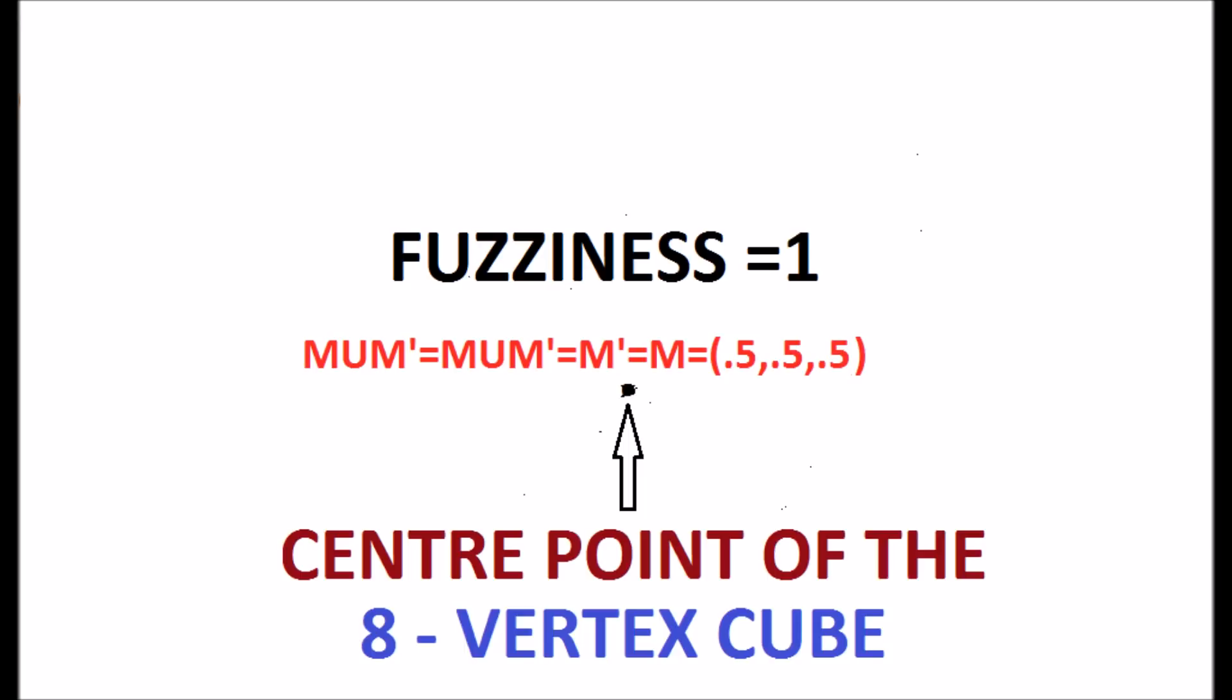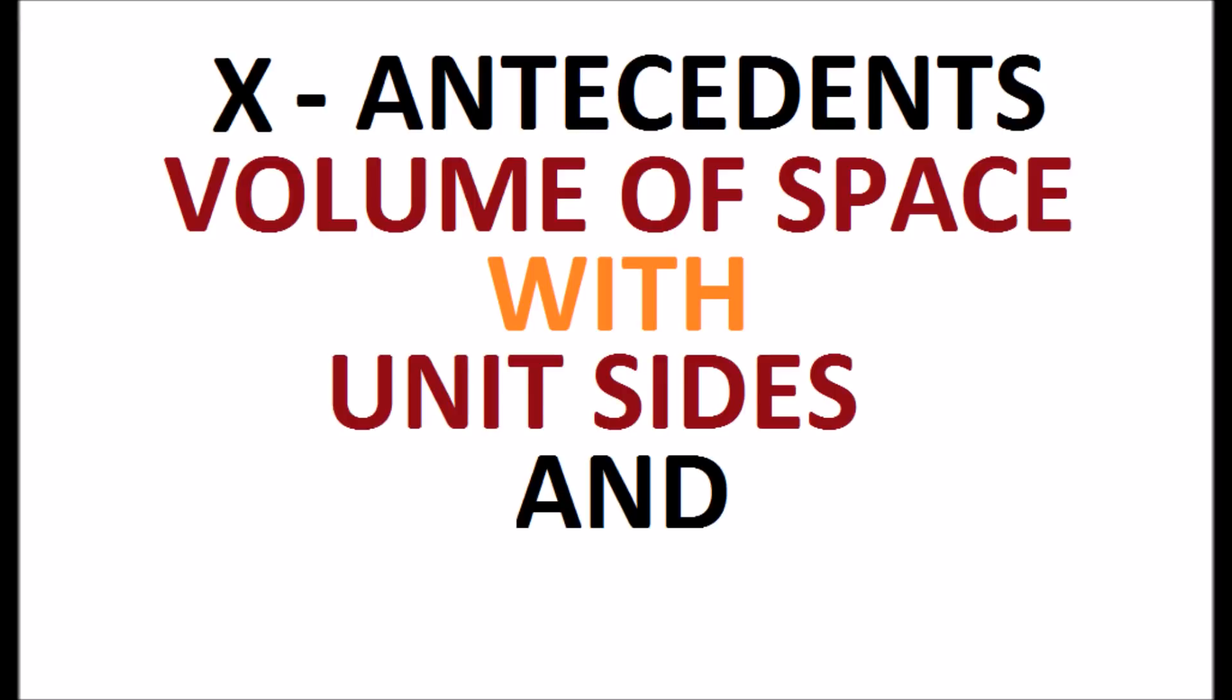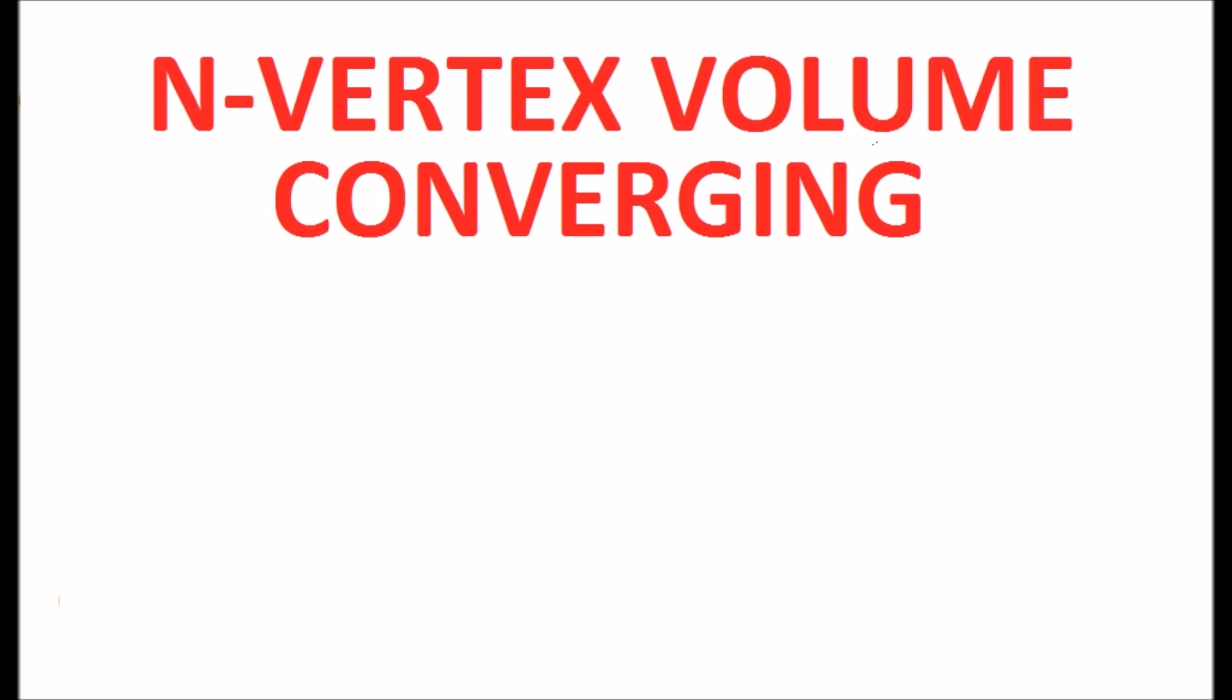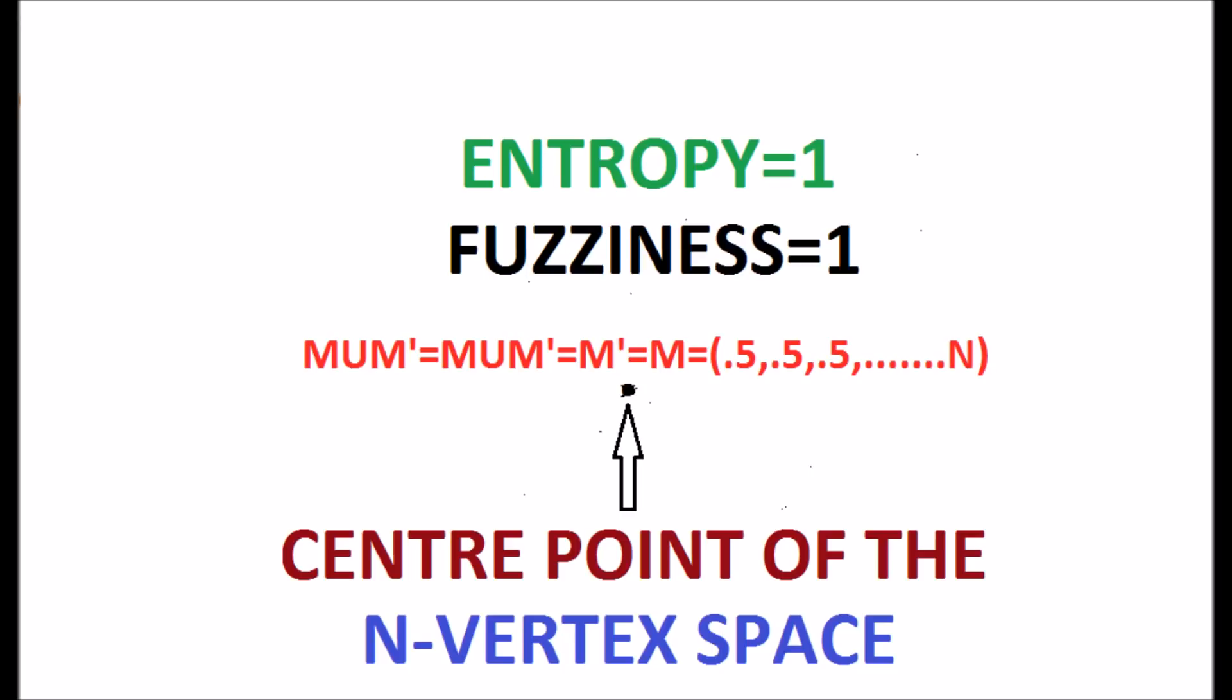Now imagine n antecedents, which will create a volume of space with unit sides having n vertex. There are many fuzzy sets inside the n vertex volume of space, having n membership values, and forms a volume of space inside the n vertex space with same n vertex. The volume is sinking down and converging to a point. The point is the middle of the n vertex volume of space, where the fuzziness is maximum equal to 1 and the membership values of all n values are 0.5 and the entropy is also 1. So this is a very interesting information about the variation of uncertainty is being represented in fuzzy sets.